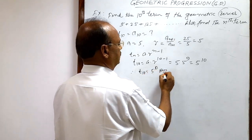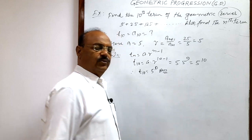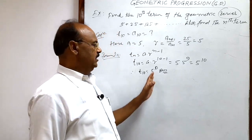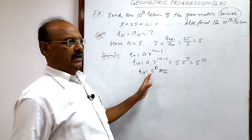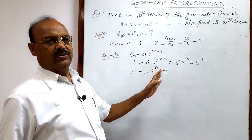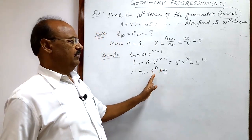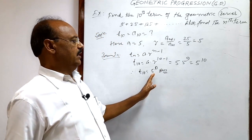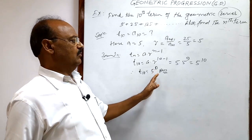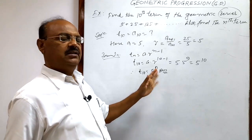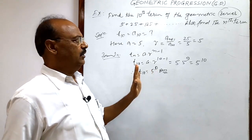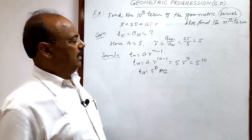There is no need to multiply 5 ten times or to simplify further. Writing 5 to the power 10 as the answer is sufficient.